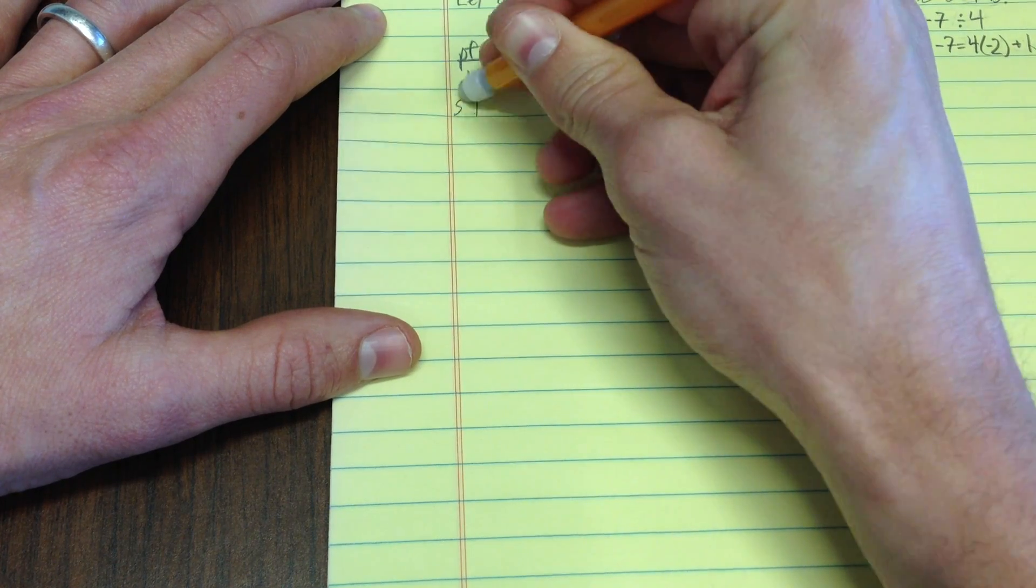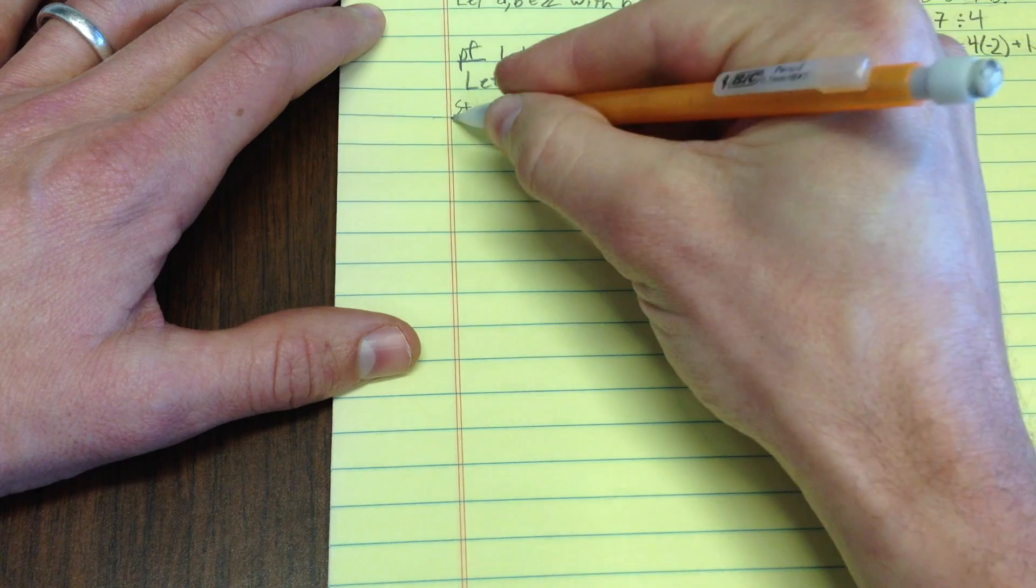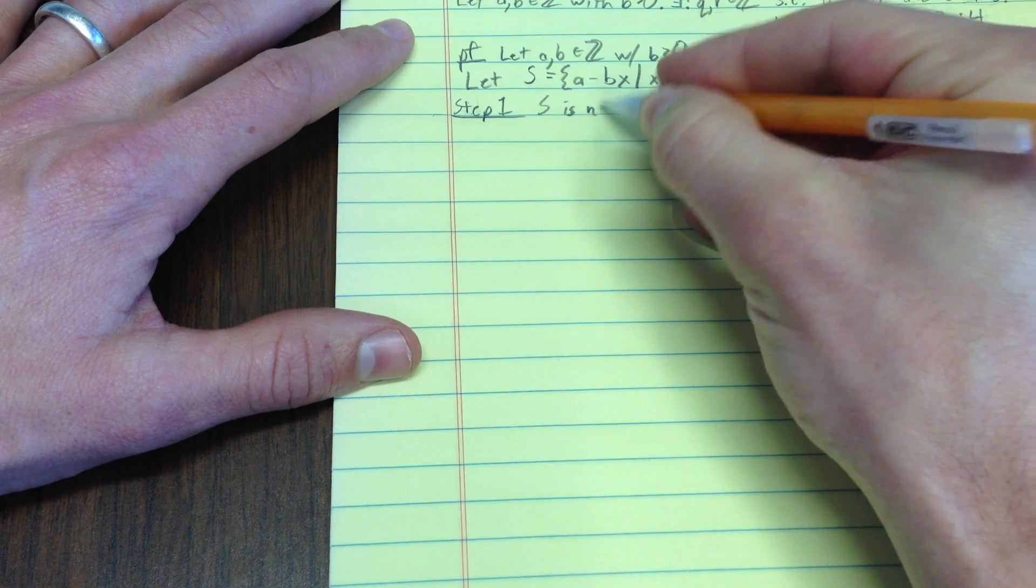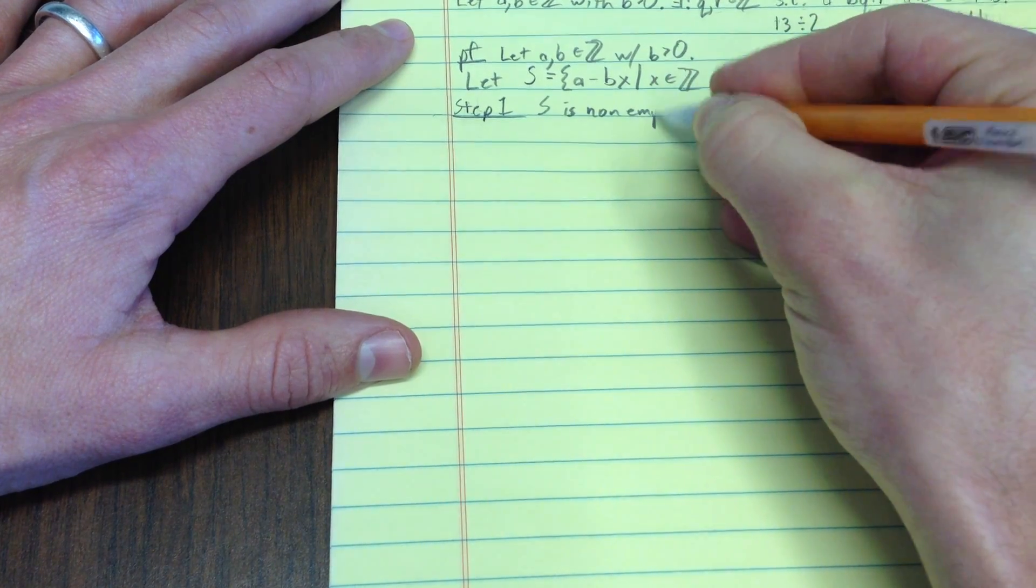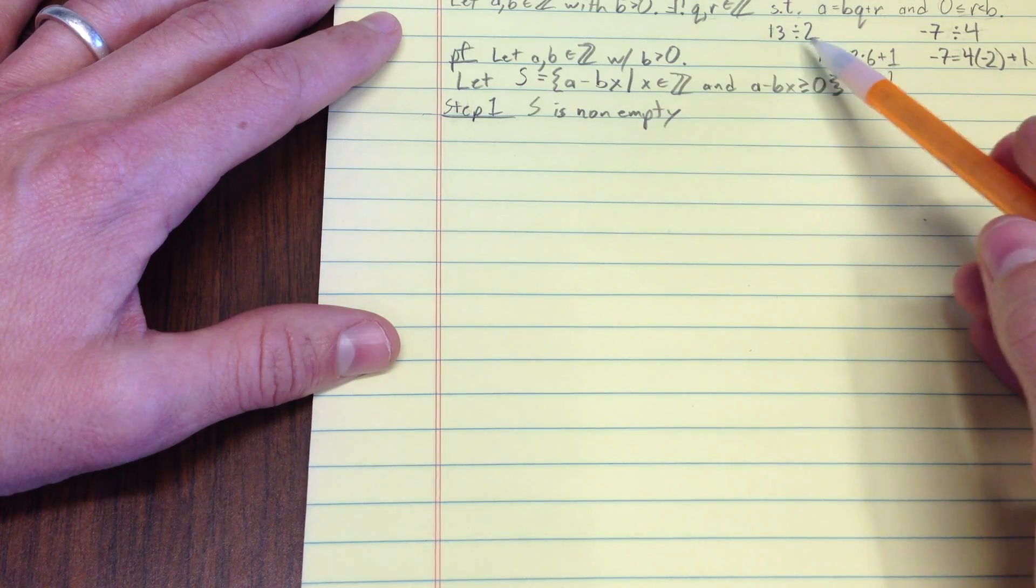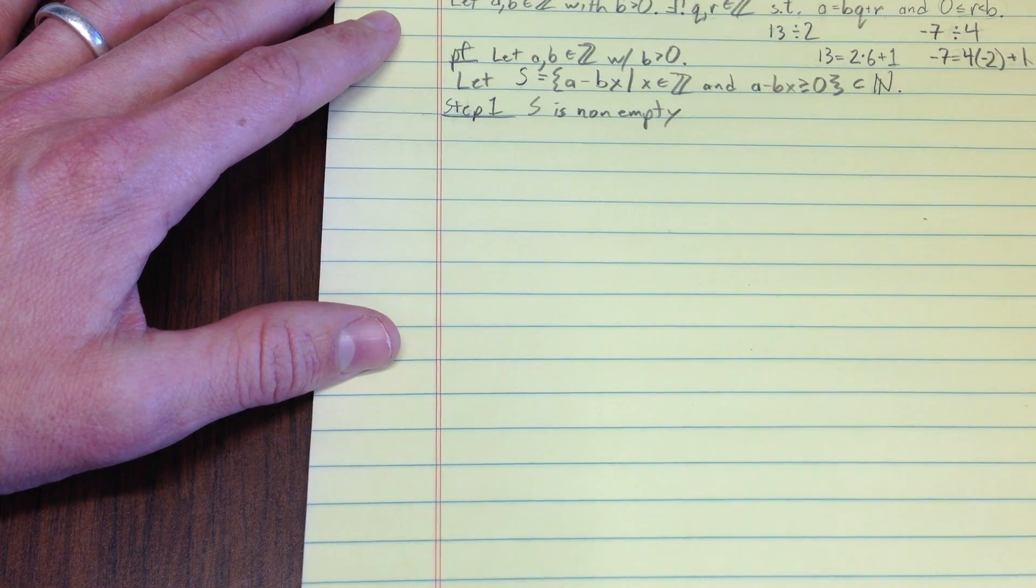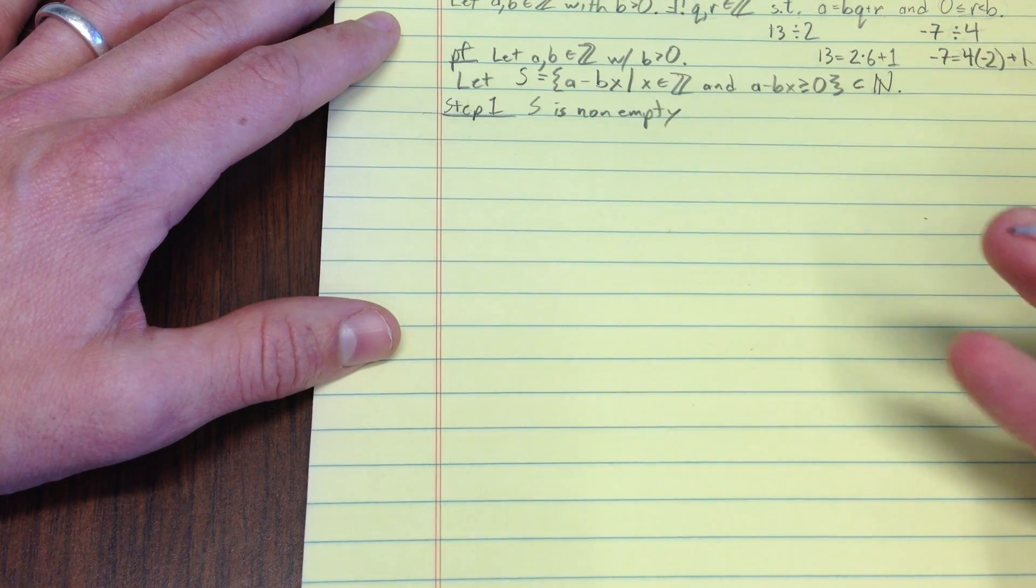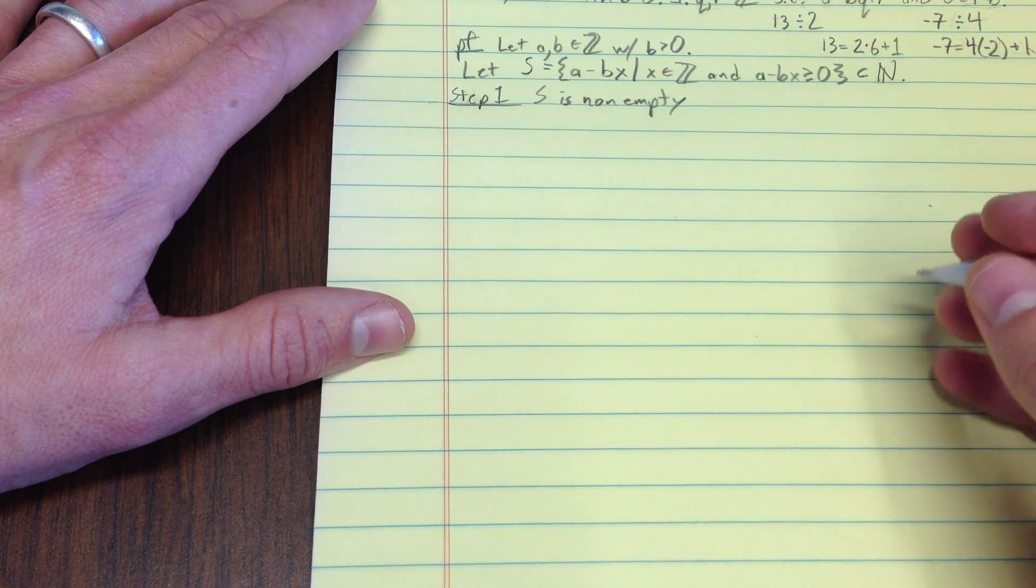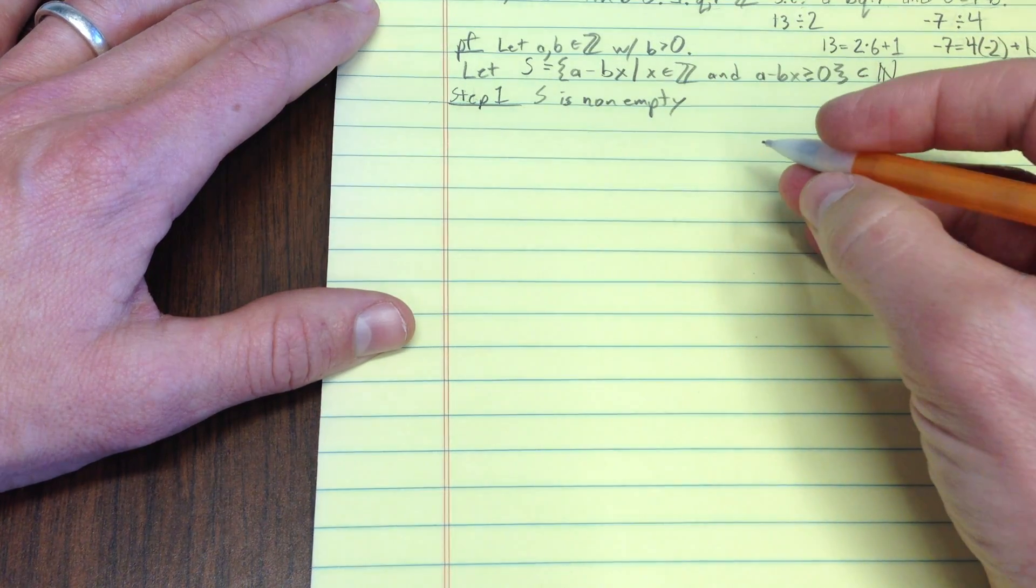I guess step starts with an st. Step one. S is non-empty. Well, that's a little bit of a sticky wicket because I don't know whether a is positive or negative. So, how can I tell you somehow common sense says, well, there should be something in here that's positive. But here's kind of a nice technique for doing that.